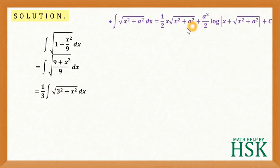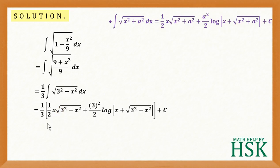In this formula, I place 3 for a and x as is. Applying this formula, I get 1 by 3 times bracket 1 by 2 x square root of 3 squared plus x squared plus 3 squared upon 2 log of x plus square root of 3 squared plus x squared plus c.